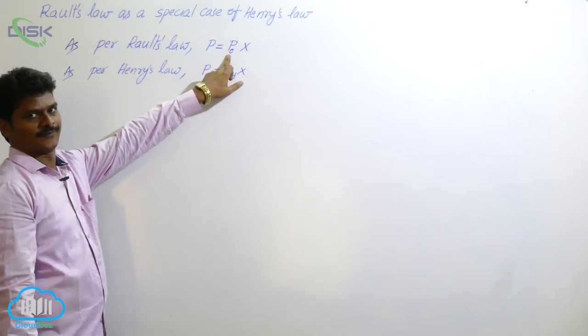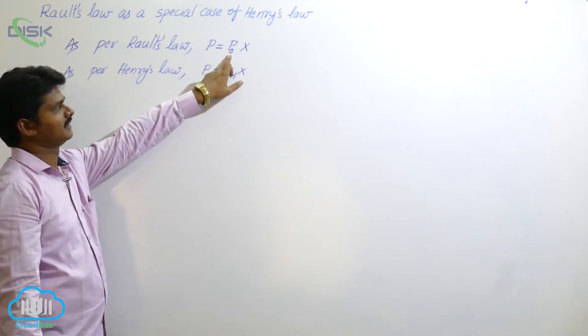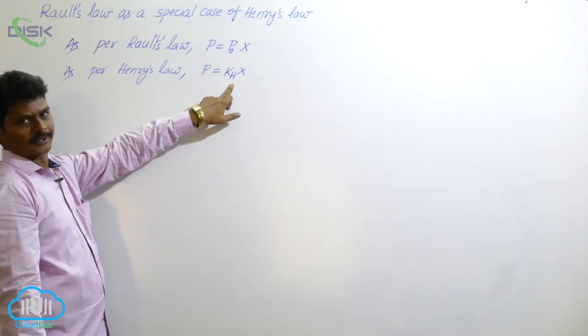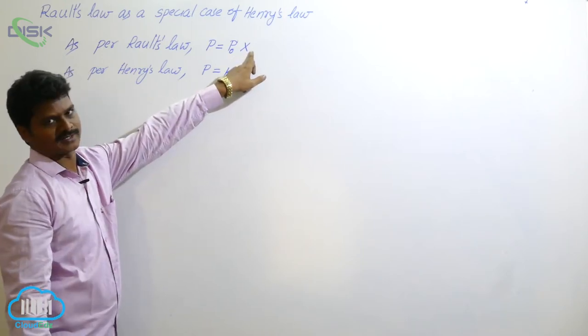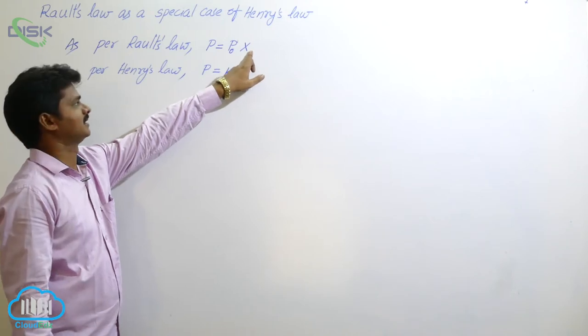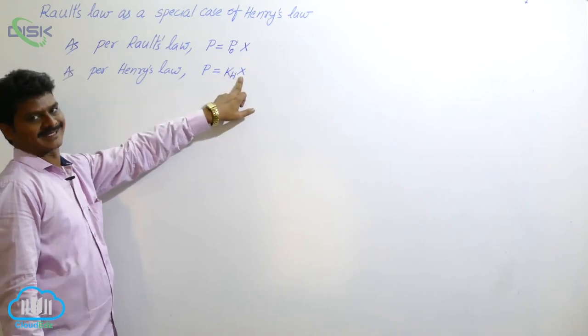Here p0 is the vapor pressure of pure solvent. Here kh is Henry's Law constant. In Raoult's Law, x is mole fraction of solvent. In Henry's Law, x is mole fraction of gas dissolved.